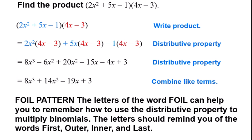The FOIL pattern stands for First, Outer, Inner, Last. If I have two binomials, I take the first terms in each and multiply them. Then the first term of the first binomial and the last term of the second — those are my outside terms. Then the second term of the first and the first term of the second — those are my inner terms. And then I take the last term of each and multiply those. Then I add all of those together and combine my like terms.